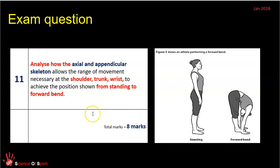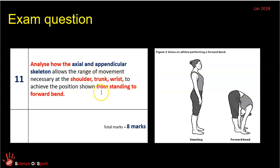So that's the interpretation of the question. We know it's Question 11, we know it's eight marks, we know that Question 11 is only about the skeletal system. We know from the phrase 'the axial and appendicular skeleton' you've got to refer to that in your answer. We know it's going to direct you towards three joints or three body parts, and we know it will specifically want you to talk about a certain position or movement. Talk about anything apart from that and it's irrelevant.